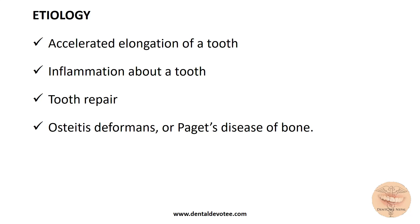The different etiologies of hypercementosis include accelerated elongation of a tooth, inflammation of the tooth, tooth repair, and osteitis deformans or Paget's disease of bone. In cases where the antagonist tooth is missing, the particular tooth supra-erupts, and in the process of supra-eruption the apical portion undergoes hypercementosis because the periodontal ligament width tends to remain constant. In an attempt to preserve the width of the periodontal ligament, cementum deposition occurs rapidly — that's why accelerated elongation of a tooth results in hypercementosis.